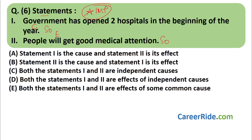The second combination is grammatically wrong. The key is the word 'will'. If the sentence said 'people should get good medical attention', then the reverse would be correct — people should get attention, therefore government opened hospitals. But since the word is 'will', the government opening hospitals is the cause, and people getting good medical attention is the effect. Answer is A — statement one is the cause, statement two is its effect.